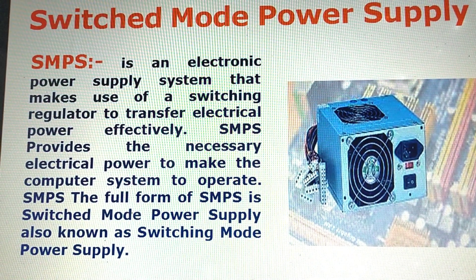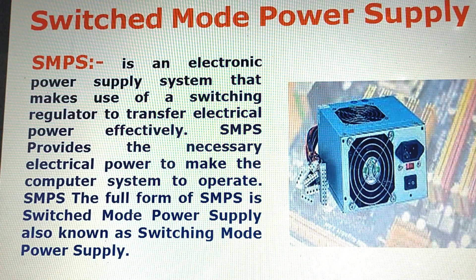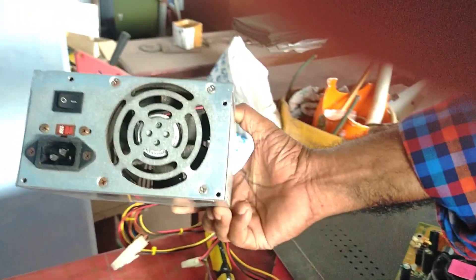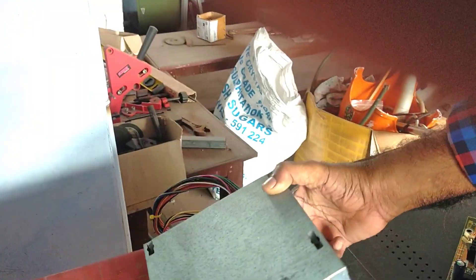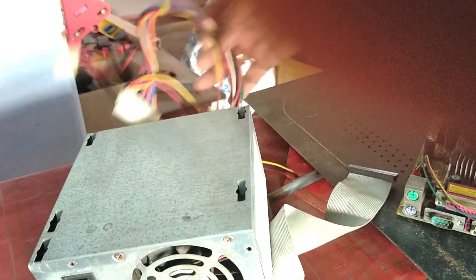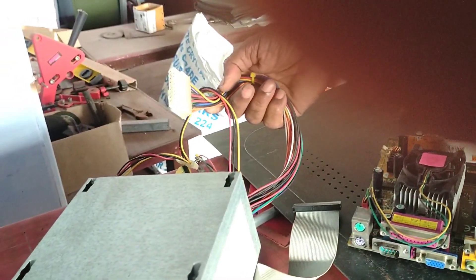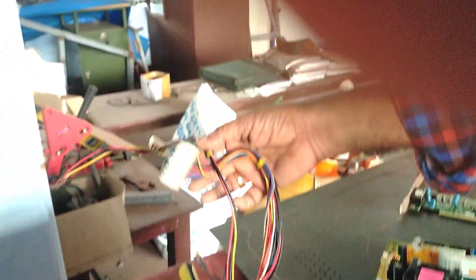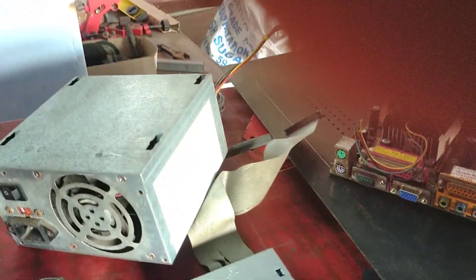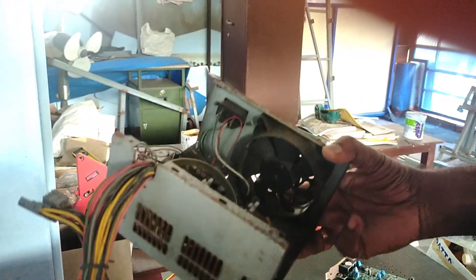Next — SMPS (Switched Mode Power Supply). This provides the necessary electrical power to make the computer system operate. It outputs different voltages: 12V, 3V, and 5V for all power supply needs inside the system.